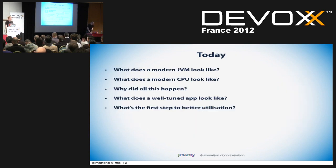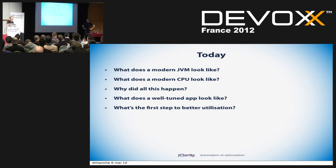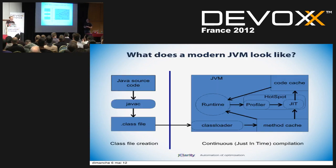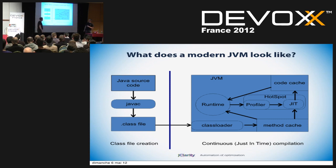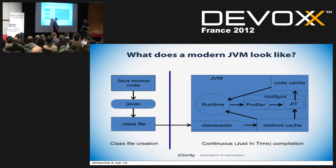Let's talk about today and look at what a modern JVM looks like. This diagram by Kirk Pepperdine shows what happens to your code. You start with Java source code, compile it with javac to a class file, put it into the class loader, which divides it up and puts the methods and bytecode into the method cache. Then there's a runtime which is executing your code — things start off in interpreted mode, just stepping through the bytecode from the method cache.